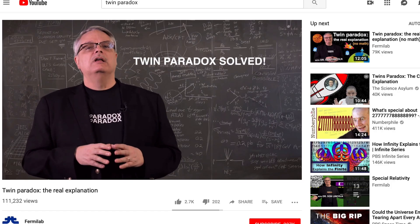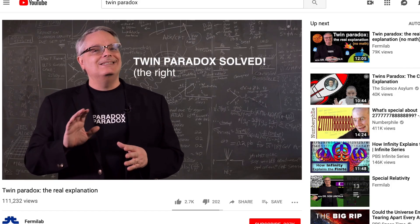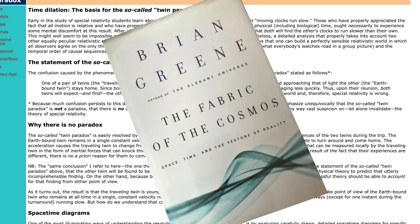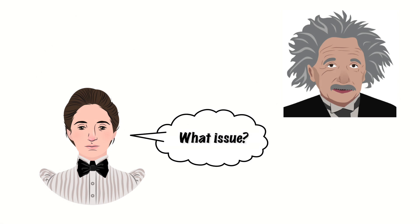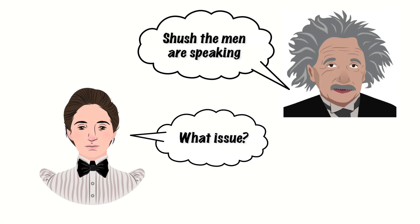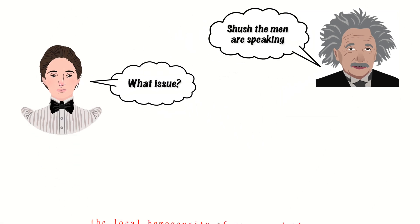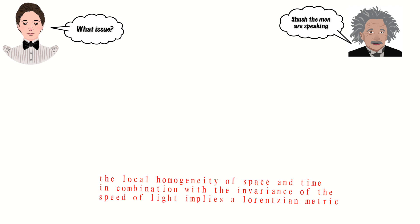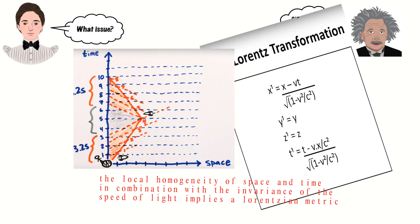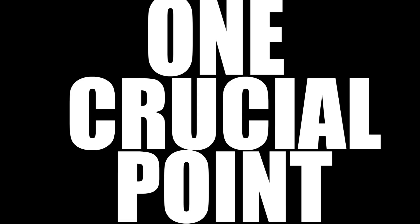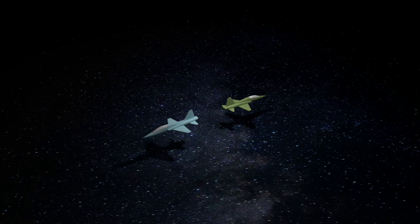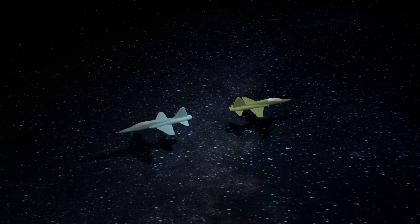It's not even just YouTube videos. Textbooks, internet pages, popular books — they often have the same issue. As they struggle to explain away the paradox, often obfuscating their answer with complex jargon, diagrams, or math, they each overlook one crucial point. To understand what that point is, let's return to our setup.